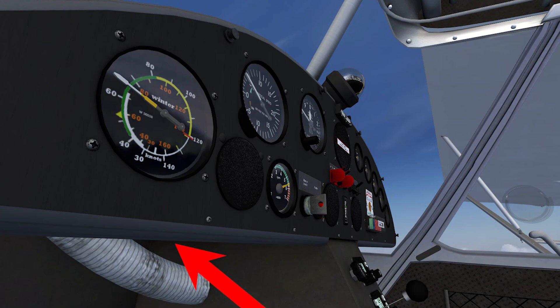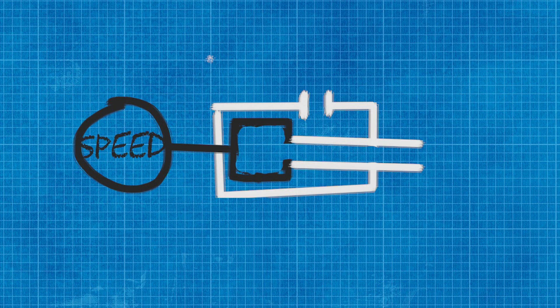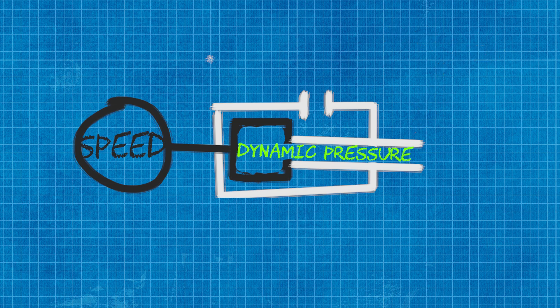Let's now look at the internals of our airspeed indicator. The pitot tube intakes the dynamic air pressure and compares it with our static air pressure. The impact force is measured and then put through some calibrated gears, and comes out as a value on our airspeed indicator.